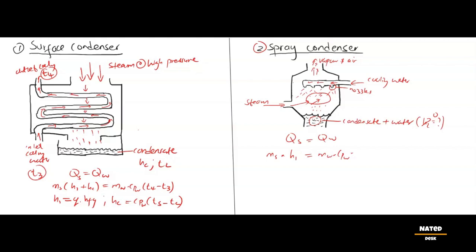In a spray condenser, we have inlet cooling water T3 but we don't have T4 outlet. Since water and condensate mix, instead we have what we refer to as the condensate mixture T4 or it will be given as the rise in temperature, change in T.